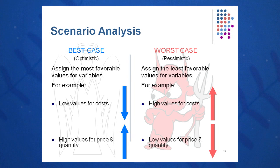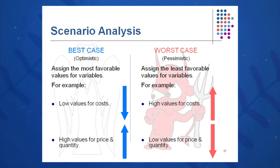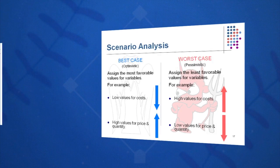In the best case, we have low values for cost and high values for price and quantity. In the worst case, we have high values for costs, both fixed and variable, and low values for price and quantity. Somewhere in the middle of those two scenarios is what you think is your most reasonable, or base case.